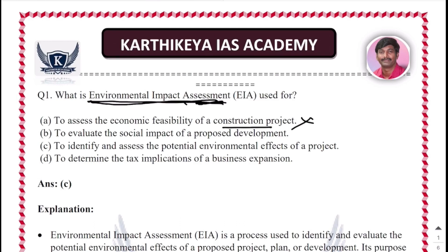Statement B: To evaluate the social impact of proposed development. Even this statement is not correct. Statement C: To identify and assess the potential environmental effects of a project. This statement is correct.